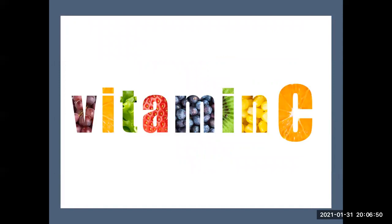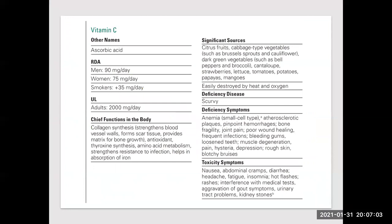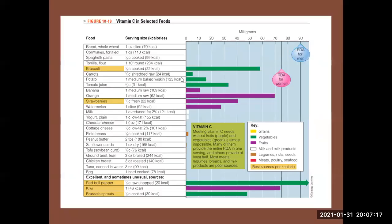Vitamin C is the last one of the water-soluble vitamins. It works as a cofactor as well as an antioxidant. Vitamin C is abundant in fruits and vegetables. Its deficiency leads to anemia, atherosclerosis, and hemorrhage, pinpoint hemorrhage. It's abundant in fruits and vegetables.